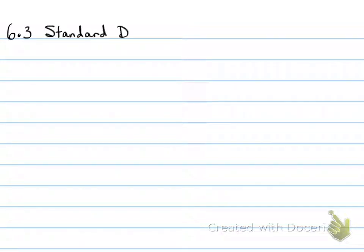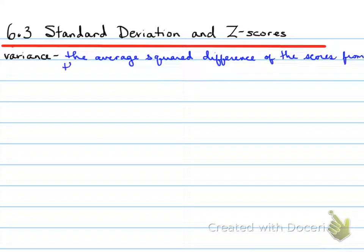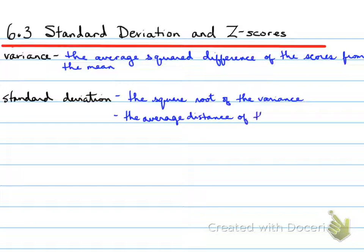6.3: standard deviation and z-scores. Variance is the average squared difference of the scores from the mean. Standard deviation is the square root of the variance, which is the average distance of the scores from the mean.